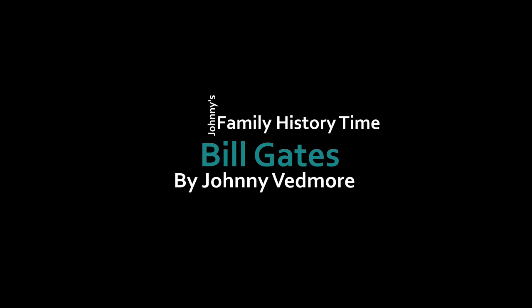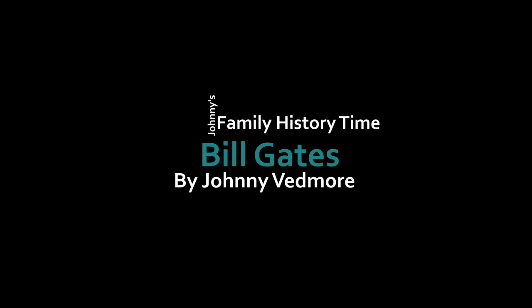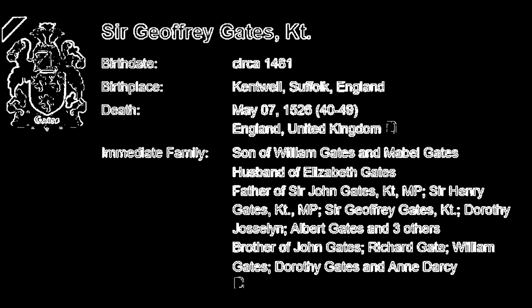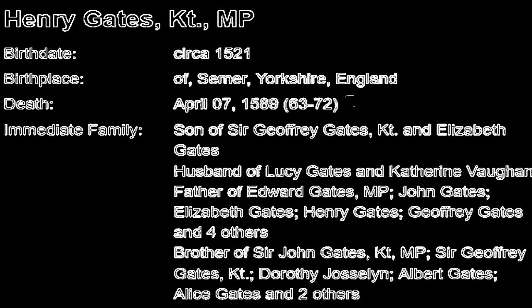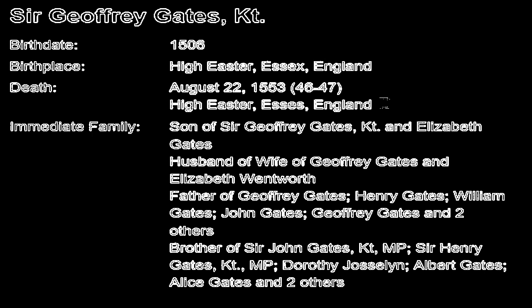Sir Geoffrey Gates' son, another William Gates, would only live until the age of 35 — born about 1450 and dying on 16 October 1485 — just a few years after the birth of his son, who would also eventually be titled Sir Geoffrey Gates. Sir Geoffrey Gates I was born about 1481 and would marry Elizabeth Clopton in Kentwell in 1500. This era is very well documented. Sir Geoffrey Gates would have eight children, most notably Sir John Gates MP, Sir Henry Gates MP, and Sir Geoffrey Gates II.